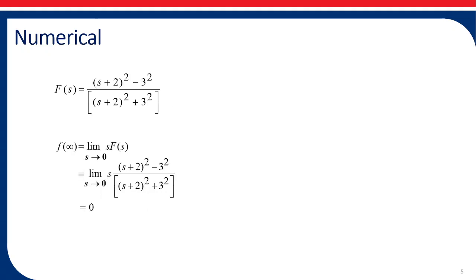Let us take another example to find the initial value and the final value. F(s) is given by [(s+2)² - 3²] divided by [(s+2)² + 3²]. To find the final value: limit as s tends to 0 of s·F(s). Substituting, s is the multiplier in the numerator, so the final value comes out to be 0. For the initial value, we need to evaluate s·F(s) as s tends to infinity.